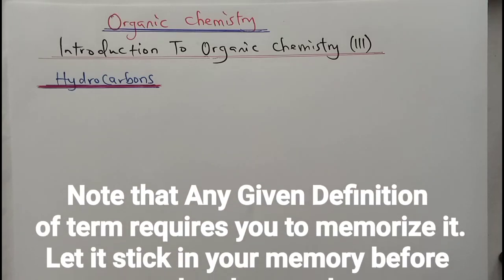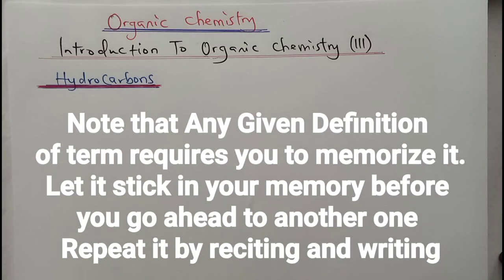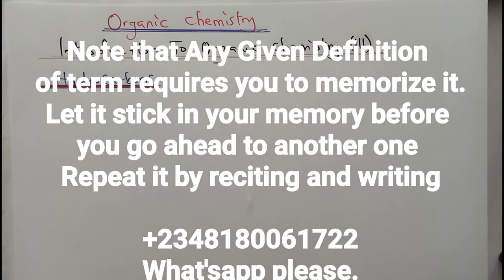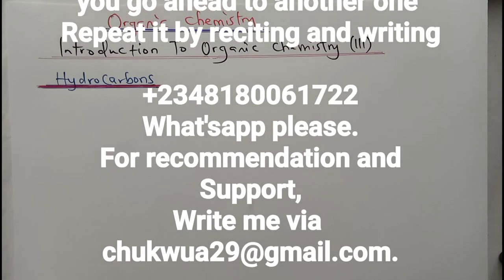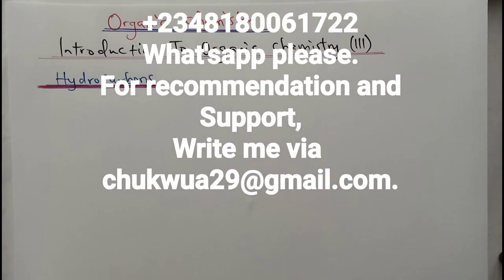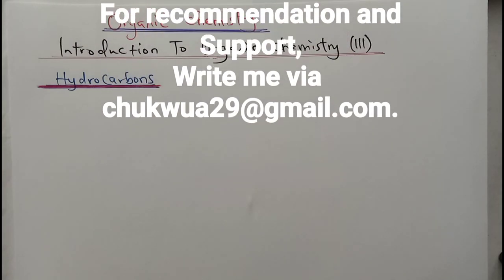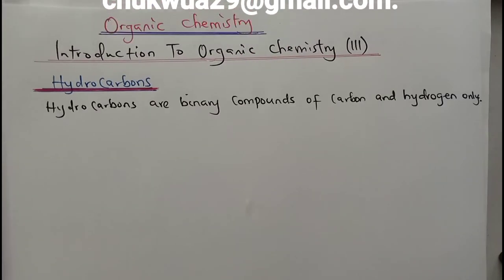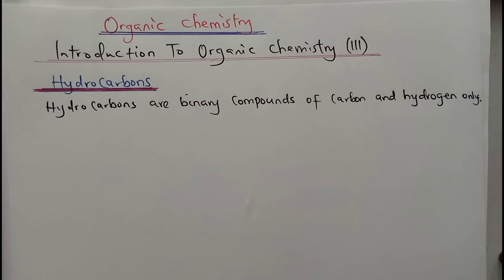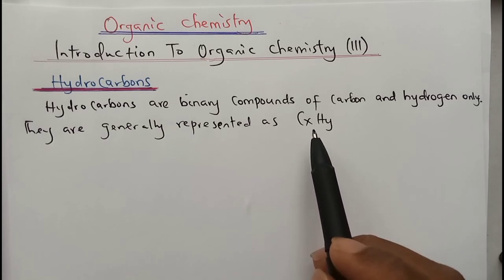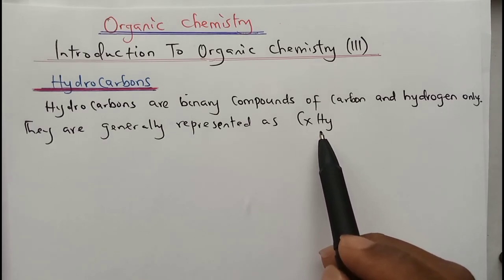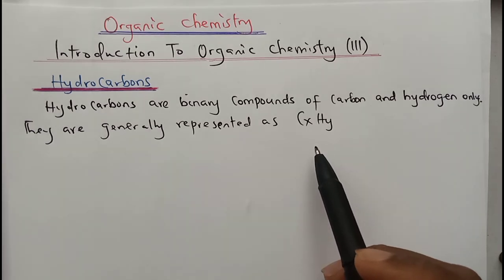I always feel happy to have you watching me here. Today in our introduction to organic chemistry 3, we're going to look into hydrocarbons. Hydrocarbons are binary compounds of carbon and hydrogen only, and we normally use the general formula CxHy, where X is the number of carbon atoms present per molecule and Y is the number of hydrogen atoms present per molecule.